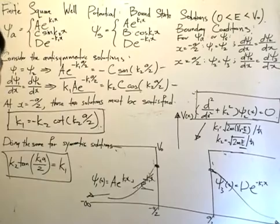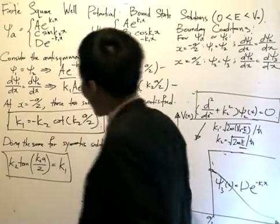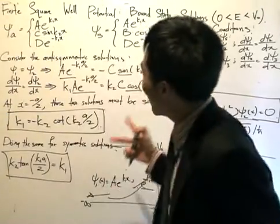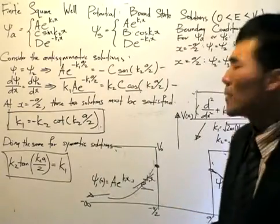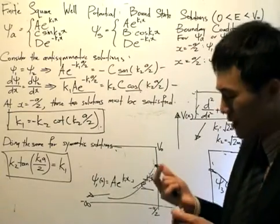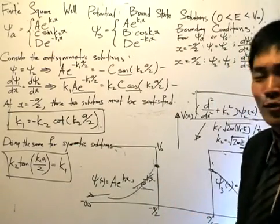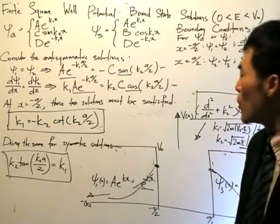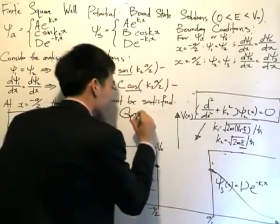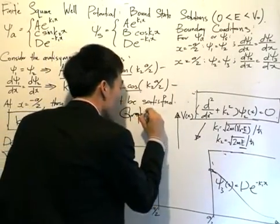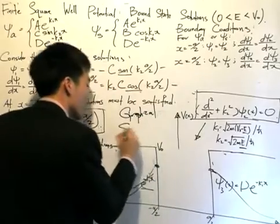As a hint, we cannot seek an analytical solution to these transcendental equations. Even rearranging them to our best ability, it's hard to find a closed-form analytical solution. Instead, we need to seek what we call a graphical solution, which is what we'll do next.